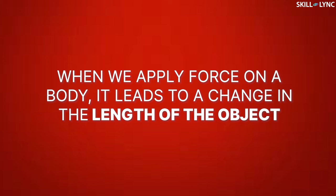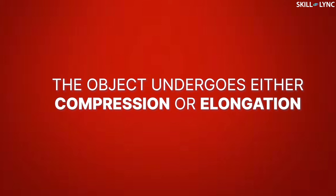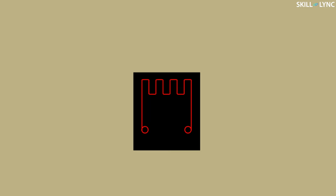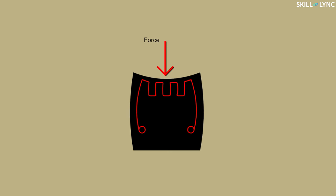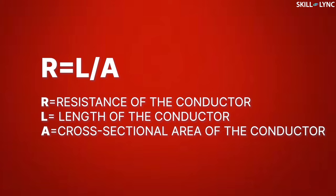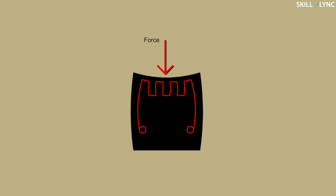Therefore, when we apply force on a body, it leads to a change in the strength of the object. The object undergoes either compression or elongation. Since the strain gauge is pasted onto the object, whenever the object undergoes deformation, the measuring grids in the strain gauge also change their shape, which leads to a change in the strain gauge's resistance. This change in resistance is due to the relation R = ρL/A for a conductor.